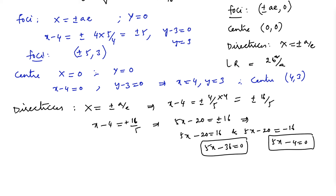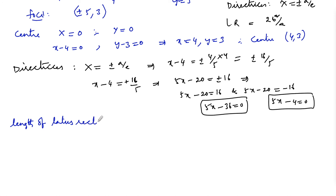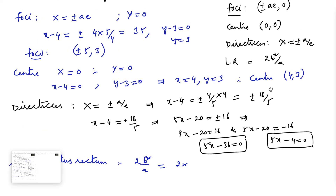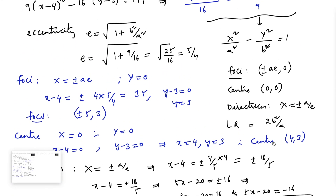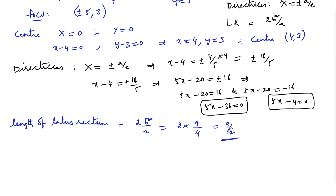Next, the length of latus rectum = 2b²/a = 2 × 9/4 = 18/4 = 9/2. So the length of latus rectum is 9/2 units.